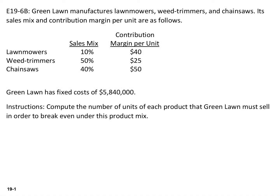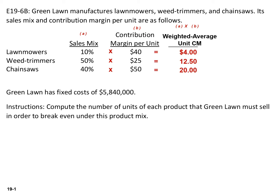The first thing that we need to do is calculate the weighted average unit contribution margin by multiplying each product's contribution margin by its sales mix and then adding the results for each product. The weighted average unit contribution margin is $36.50.